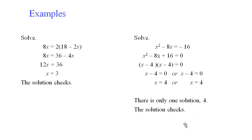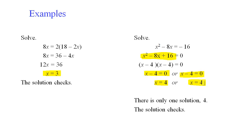Here are some examples of these properties. If we have 8x equals 2 times an expression, we can distribute, move the 4x over, divide both sides by 12, and get x equals 3. For the zero product example, we take the equation, move the constant to get a quadratic equal to zero, factor it, and set each factor equal to zero — in this case both factors give x equals 4.